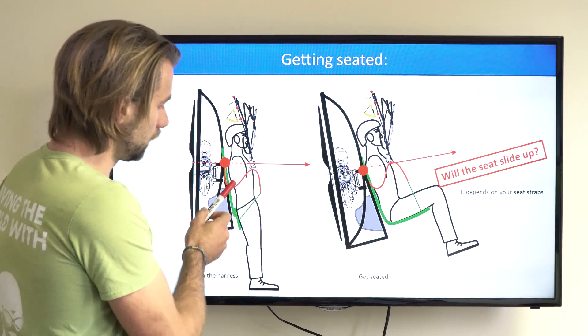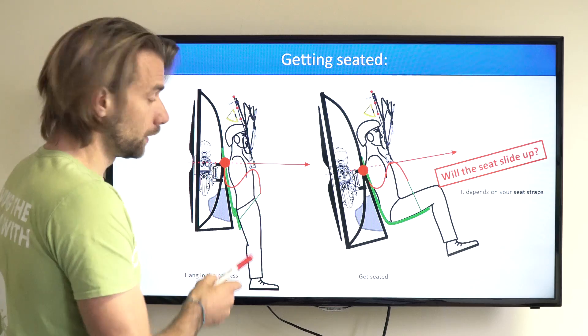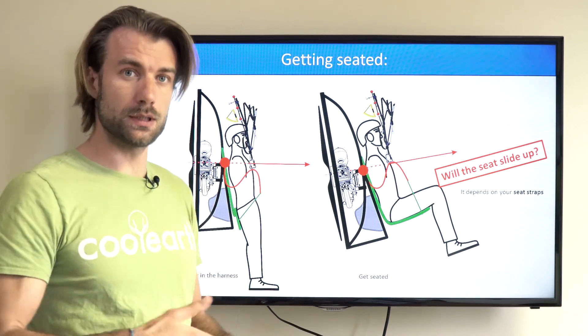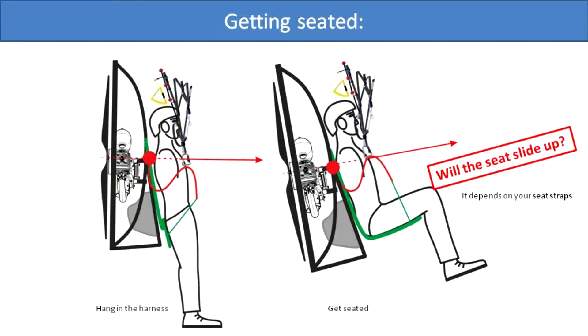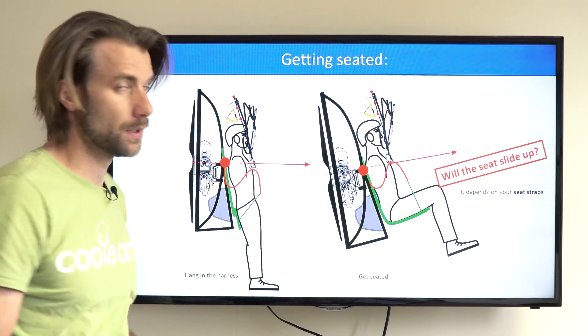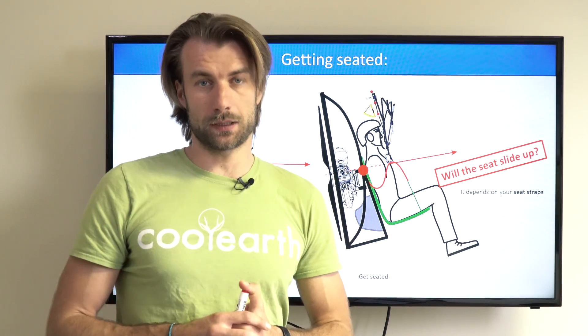If your butt is higher than the seat board strap, it's pretty easy. You just raise your knees and the seat board will automatically slide up underneath your body. Now the relative position of your butt and the seat board strap is given by two factors.